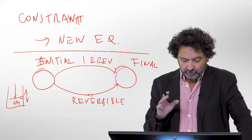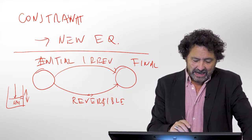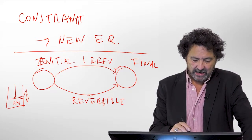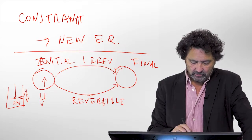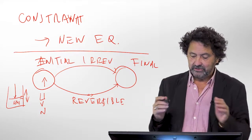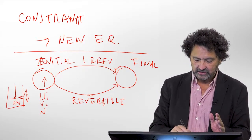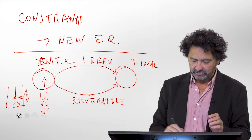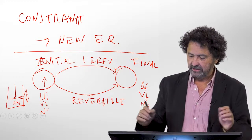Now, the important thing about this: equilibrium states are defined by energy, volume, and number of particles. This initial state will be initial energy, initial volume, number of particles initial, and this will be final energy, final volume, final number.